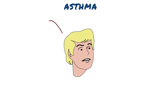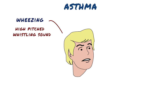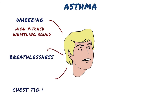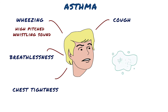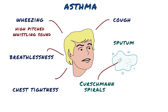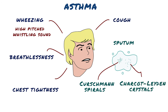Asthma is manifested by recurring episodes of wheezing — a high-pitched whistling sound that usually happens during exhalation — breathlessness, chest tightness, and cough, particularly at night or in the early morning. A characteristic finding in sputum or bronchoalveolar lavage specimens is Curschmann spirals, which are spiral-shaped mucus plugs — elongated mucus casts from small bronchi of people with bronchial asthma. Also present are numerous eosinophils and Charcot-Leyden crystals, which are needle-shaped and formed by the breakdown of eosinophils.